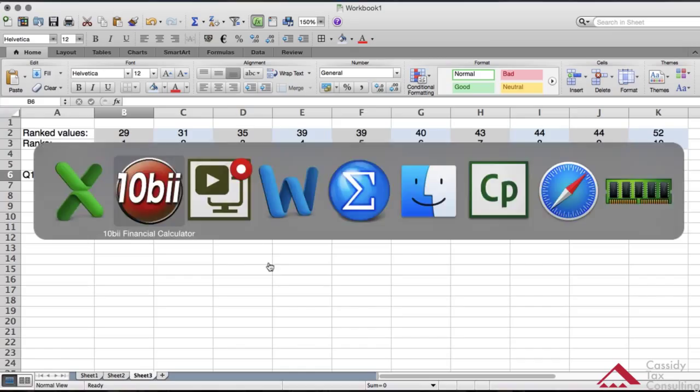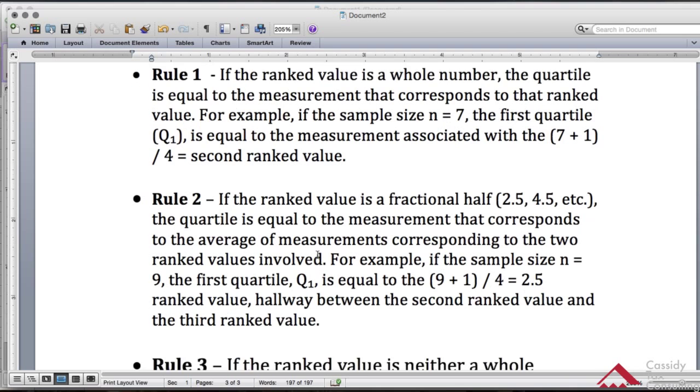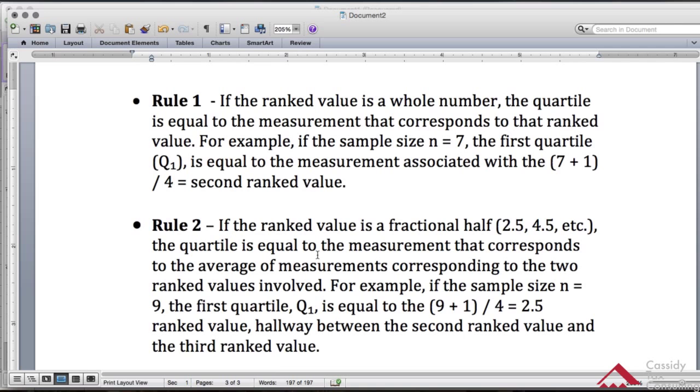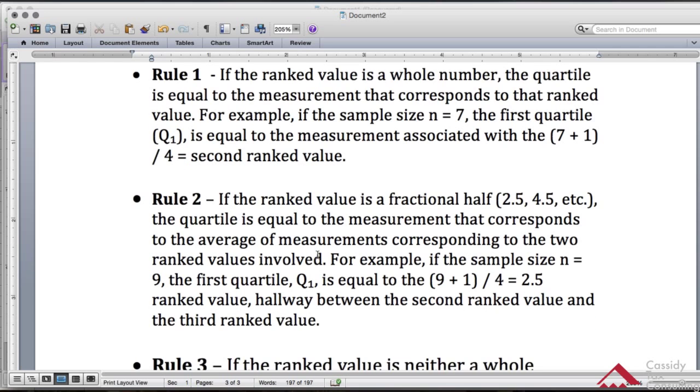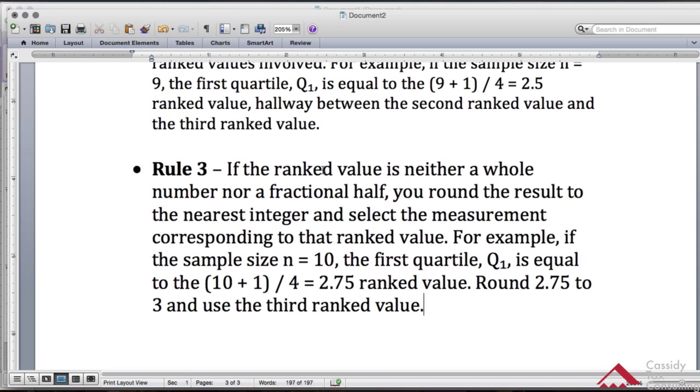Let me go into the rules. I want to show you the rules for that. So what happened was, considering that wasn't a whole number, here's an example, rule number 3. If the ranked value is neither a whole number nor a fractional half, you round the result to the nearest integer and select the measurement corresponding to that ranked value.